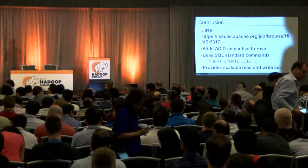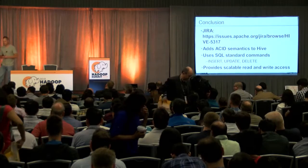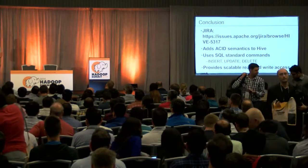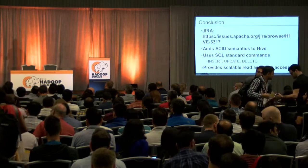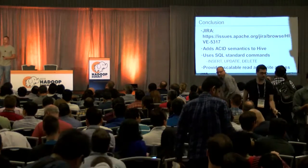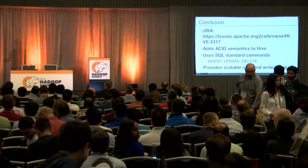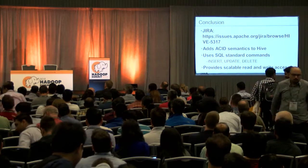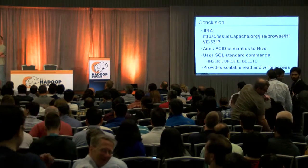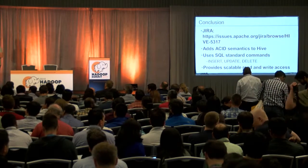The question is: is the compaction configuration global or table-level? It is global at this point. You as a user can manually request a compaction by saying ALTER TABLE COMPACT and specifying either minor or major. Adding per-table annotations to make it more or less aggressive is an interesting thought we hadn't actually contemplated.